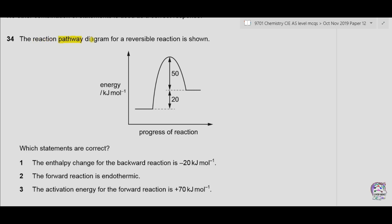Question 34: the reaction pathway diagram for a reversible reaction is shown. On the x-axis we have the progress of reaction; on the y-axis we have energy in kilojoules per mole. Which statements are correct? Statement 1: the enthalpy change for the backward reaction is −20 kJ/mol. The product has more energy than the reactants, so the backward enthalpy is negative and the difference is 20, giving −20 kJ/mol. Statement 1 is correct.